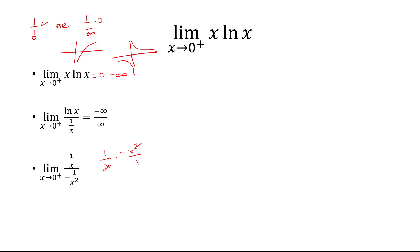That's going to cancel, and we're just left with negative x. And so the limit as x approaches 0 from the right will be 0.